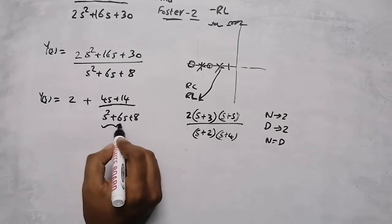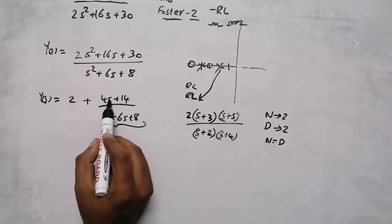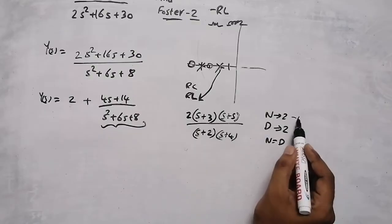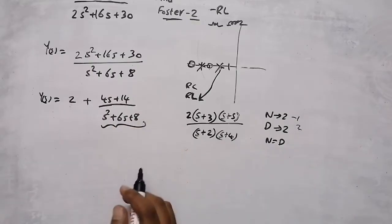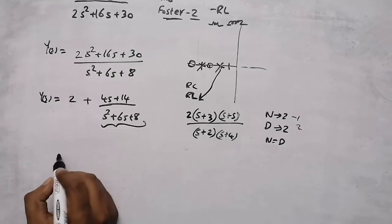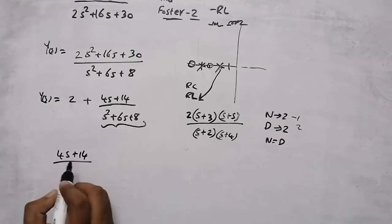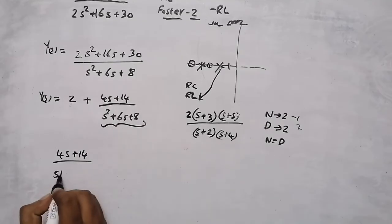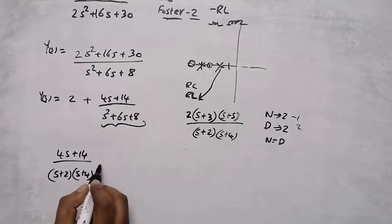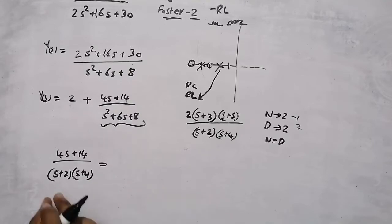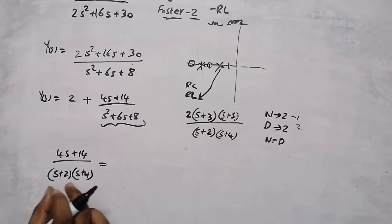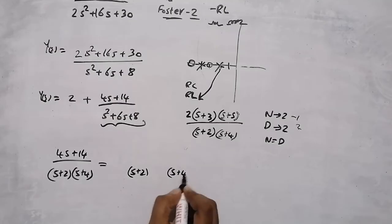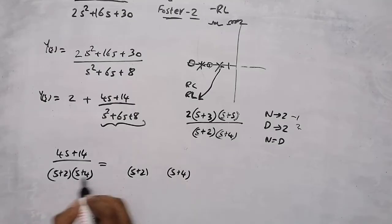For the remainder term, the degree of the numerator is 1 and degree of the denominator is 2, so we can directly do partial fractions. We write (4s + 14) / [(s + 2)(s + 4)] in partial fraction form: A/(s + 2) + B/(s + 4).